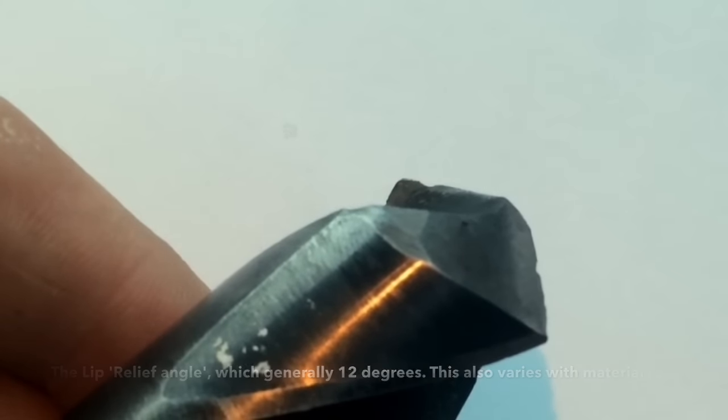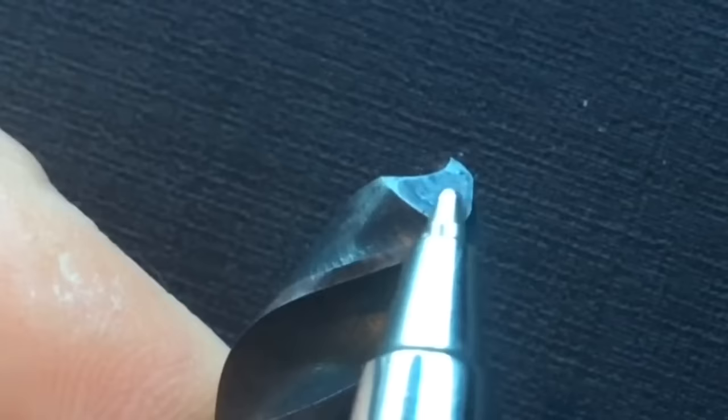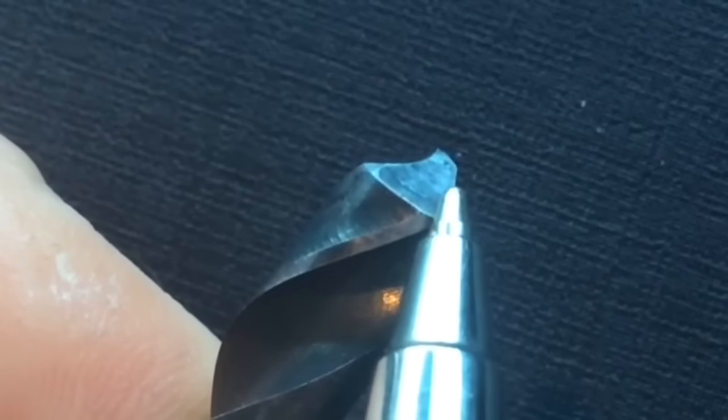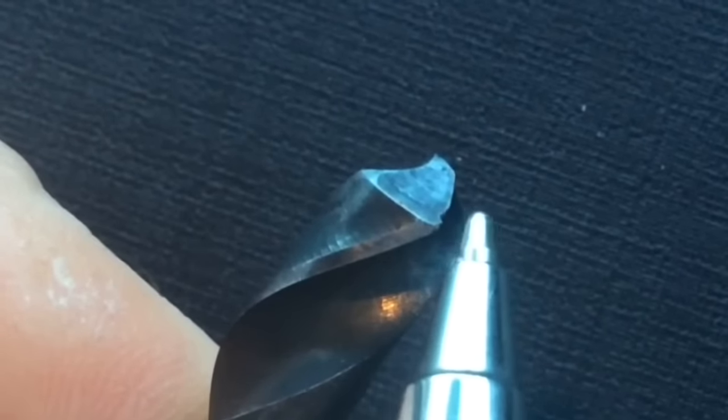That there is around 12 degrees. If this lip edge is too low, then that will protrude this point edge too high, and it will cut aggressively into the metal.